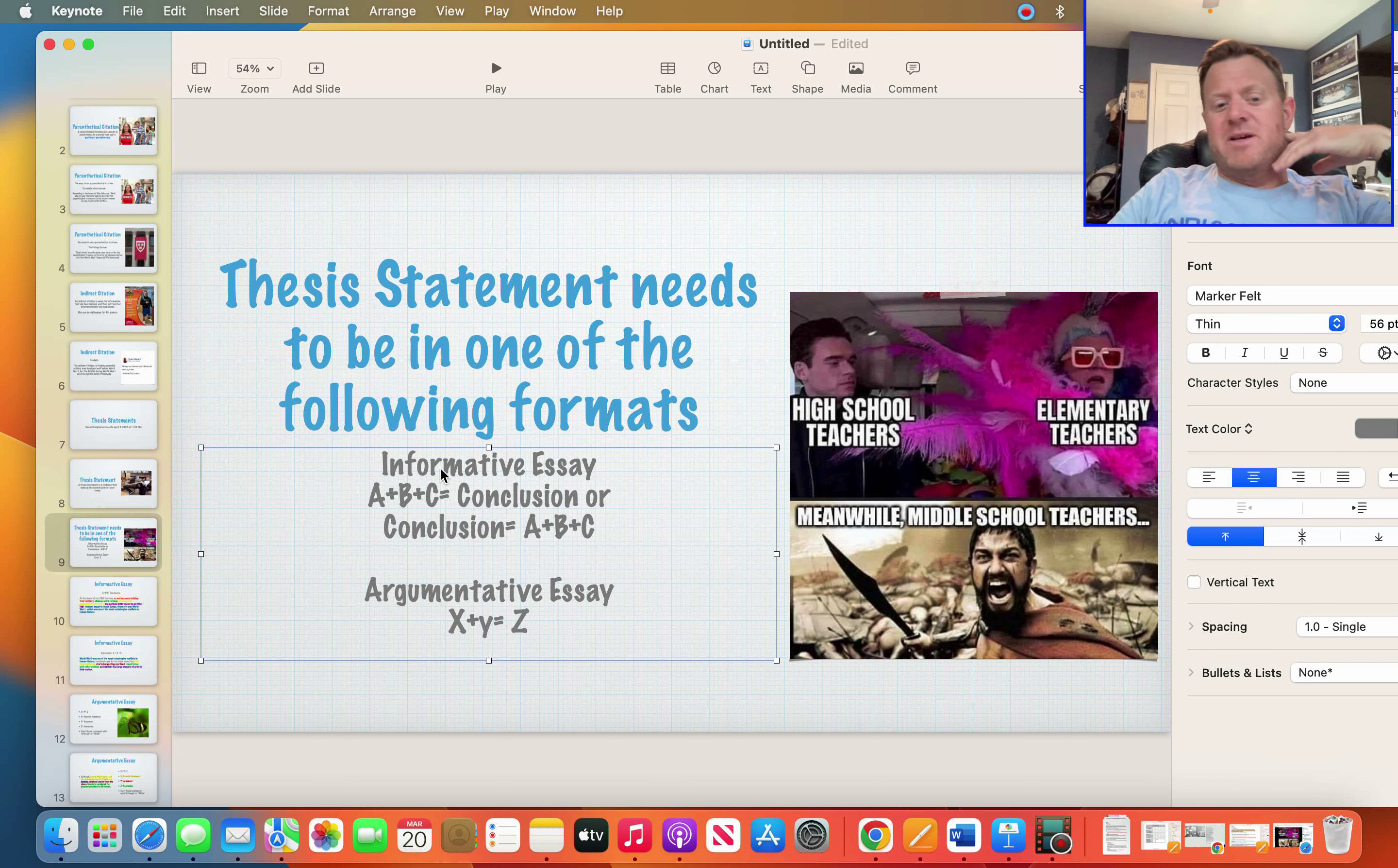If you're doing an informative essay, you're going to use this formula. A plus B plus C equals conclusion, or conclusion equals A plus B plus C. If you're doing an informative essay, this is actually pretty easy.